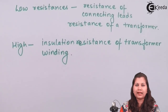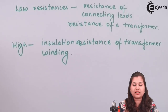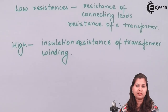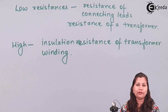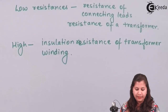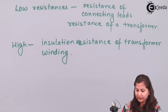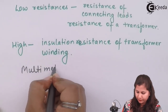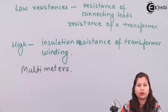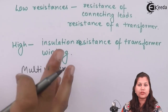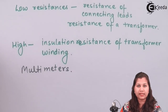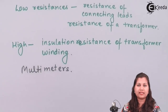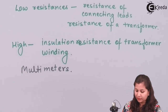The value of resistance can vary from very low to very high. There are various methods to measure resistance values, and devices such as multimeters can be used. Multimeters are commonly used for the measurement of resistances. However, for very low and very high resistances, there are some specific methods.